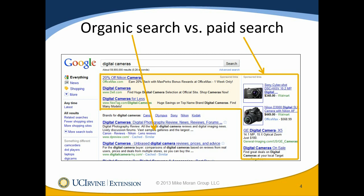At one point, paid search results were sometimes intermingled with organic search results and not even identified. But you can see in this screenshot the words 'sponsored links' in a couple of places that identify which results are paid and which are not. That's pretty standard now, and I think search engines would come under a lot of fire if they ever tried to go back to not identifying paid links or intermingling them to confuse searchers.